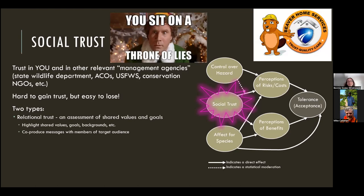There are two types of trust. Relational trust is an assessment of shared values and goals — connecting directly with your audience. For example: 'I've lived in Massachusetts all my life, I know what the problems with beavers are, and I'm from your backyard. I've been in your same shoes.' Find a real connecting point and use it — don't manufacture a false connection.